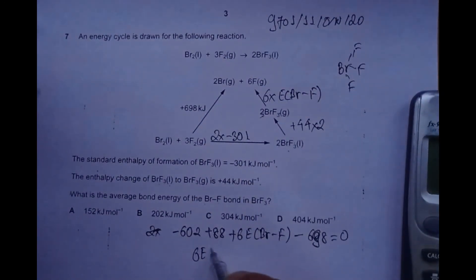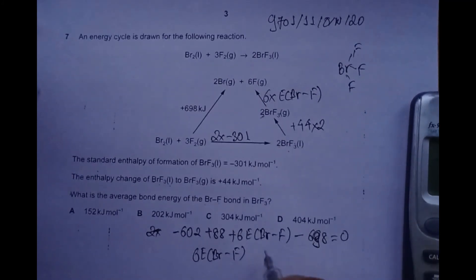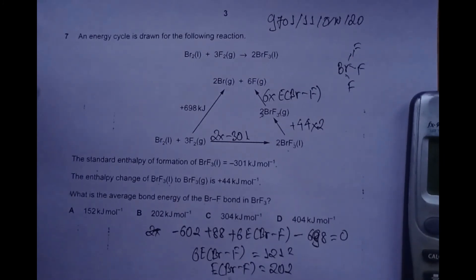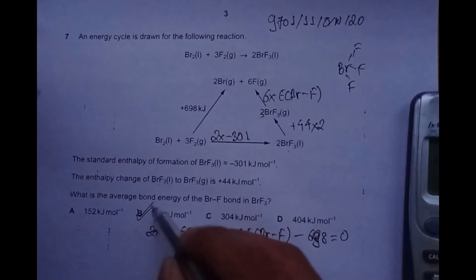So 6E(Br-F) = -1212. When -1212 goes to the other side, it becomes +1212. Dividing by 6 on both sides gives us +202. Therefore, the bond energy of Br-F is +202 kJ/mol, which means B is the correct answer.